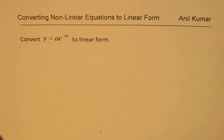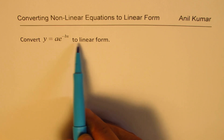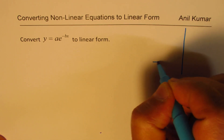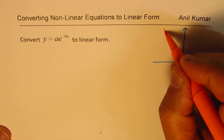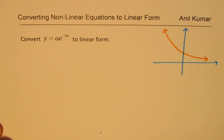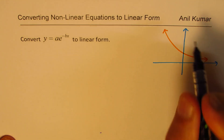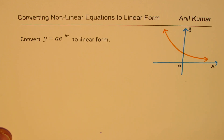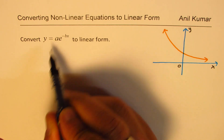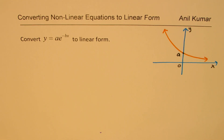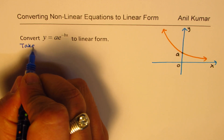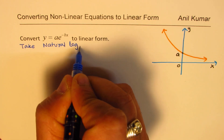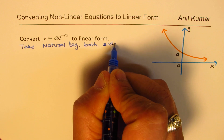Here is the last example. We need to convert the exponential equation y equals to a times e to the power of minus bx to linear form. The graph of this curve is exponential decay. When x equals 0, the value is a times 1, so the y-intercept is a.